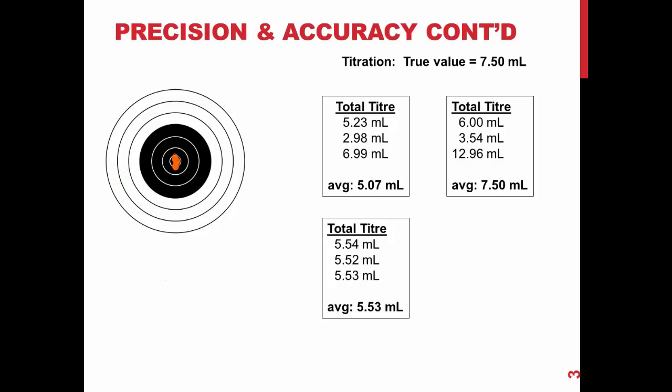This last example demonstrates what you strive for in the game of darts. All of the throws are very close together and very close to the bullseye, meaning the player has high precision and high accuracy.